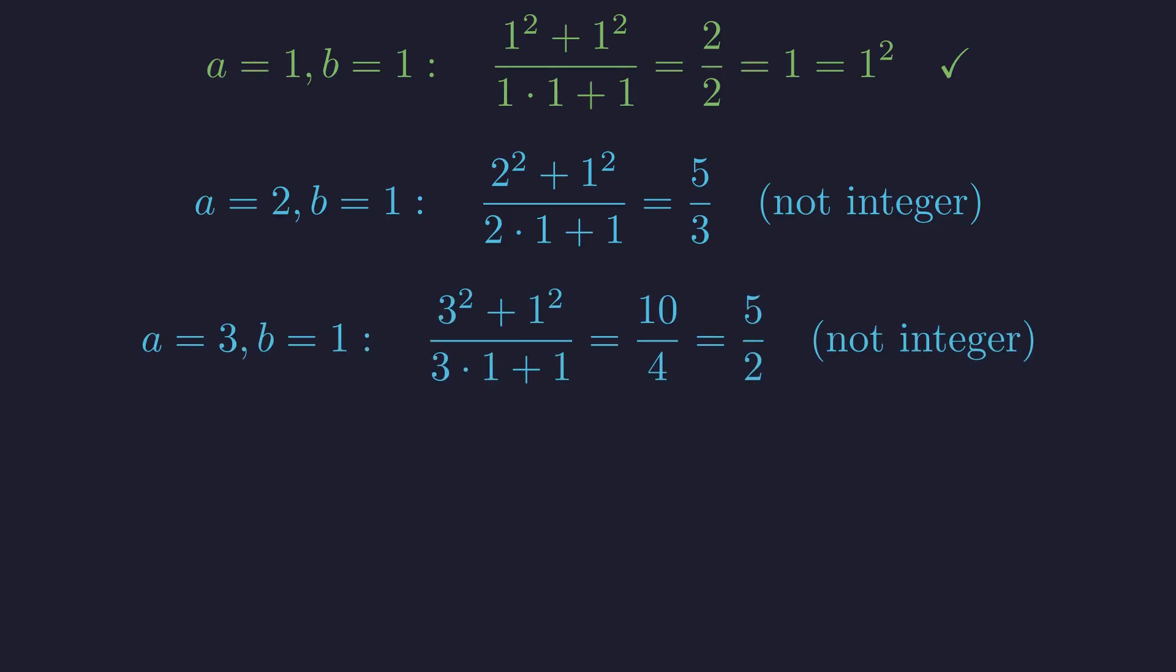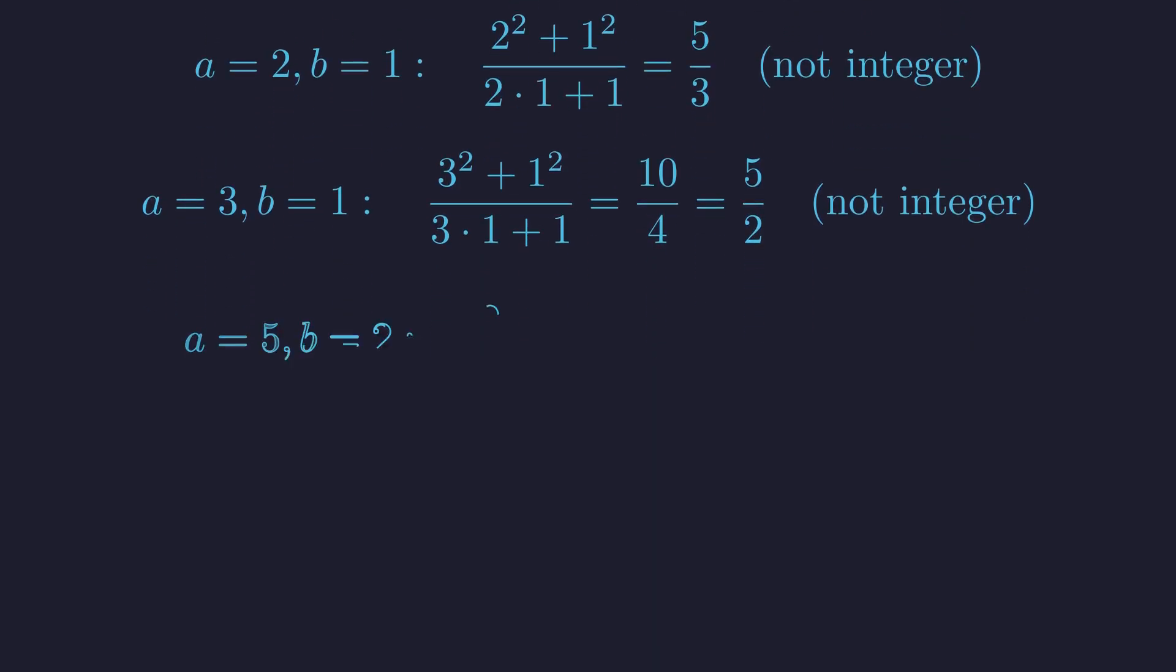For a equals 5, b equals 2, we get 29 elevenths, again not an integer.